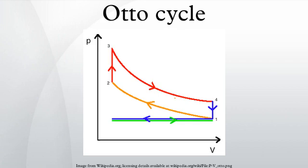Process 4 to 1, Idealized Heat Ejection: The piston is momentarily at rest at BDC. The working gas pressure drops instantaneously from 4 to 1 during a constant volume process as heat is removed to an idealized external sink that is brought into contact with the cylinder head. The gas has returned to state 1. Process 1 to 0, Exhaust Stroke: The exhaust valve opens at point 1. As the piston moves from BDC to TDC with the exhaust valve open, the gaseous mixture is vented to the atmosphere and the process starts anew.